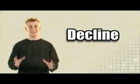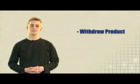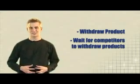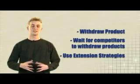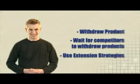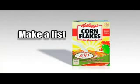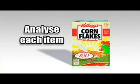The final stage is decline, where sales start to fall. At this point, the firm can either withdraw the product, wait until other competitors have withdrawn their products and take their sales, or use extension strategies to revitalize the product and increase sales. Why don't you have a go at coming up with some extension strategies for Kellogg's Corn Flakes? Make a list of possible strategies on one side, and then analyze each one on the other side.